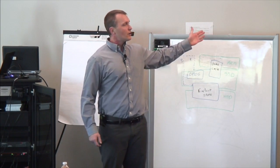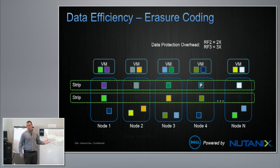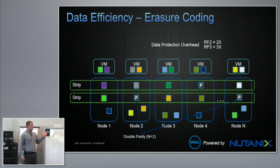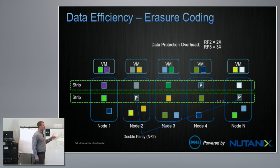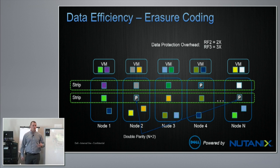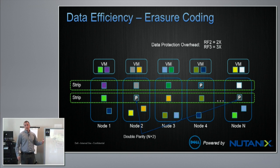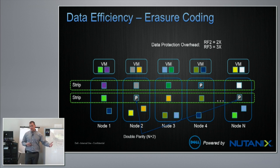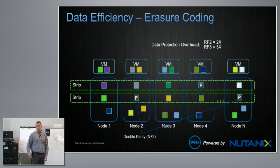That's for one-node failure. You can have multiple parities if you want to survive two nodes failing. The internal code is actually set up for three nodes with erasure coding. Instead of 2x replication overhead, you can get to 1.2x, and if you want to survive two nodes going down, you can get to 1.3x. It's very deterministic — unlike dedupe or compression. And it works with dedupe and compression as well.